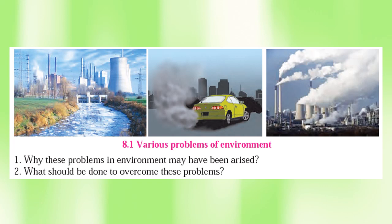It is affecting human beings. What should be done to overcome these problems? We can use bicycles for travelling short distances and we can use filters in factories while releasing smoke. There are many other such preventive measures which we can use to protect our environment.